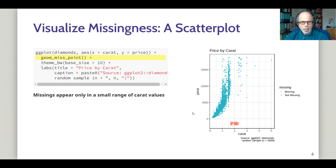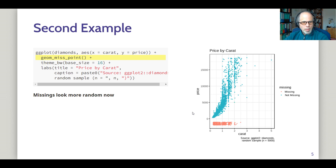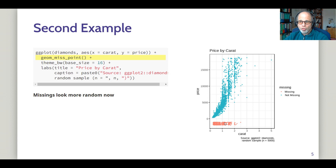On to the second example. I manipulated the data again to create a different pattern of missing values, and now we see the missings are spread out more across the range of carat values. So here the missings look more random. Another feature of the NANIAR package is that it is fully integrated into ggplot2 — it just extends ggplot2 with new geoms — so we can make full use of all the power that ggplot2 brings to the table.